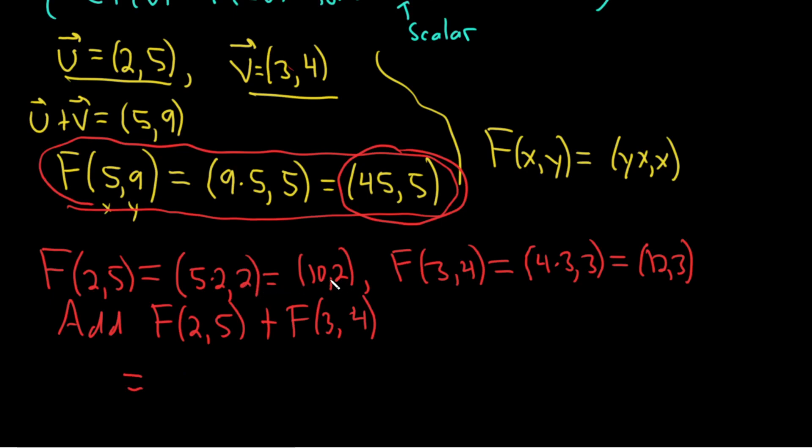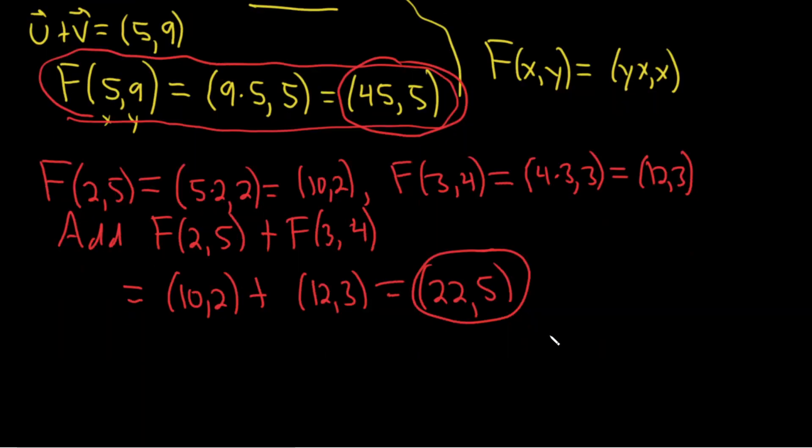So let's see. So F of 2, 5 is 10, 2, plus F of 3, 4 is 12, 3. And then you add these. 10 plus 12 is 22. And then 2 plus 3 is 5. So we end up with this. So these are not equal. This is not equal to this. So it's not linear.